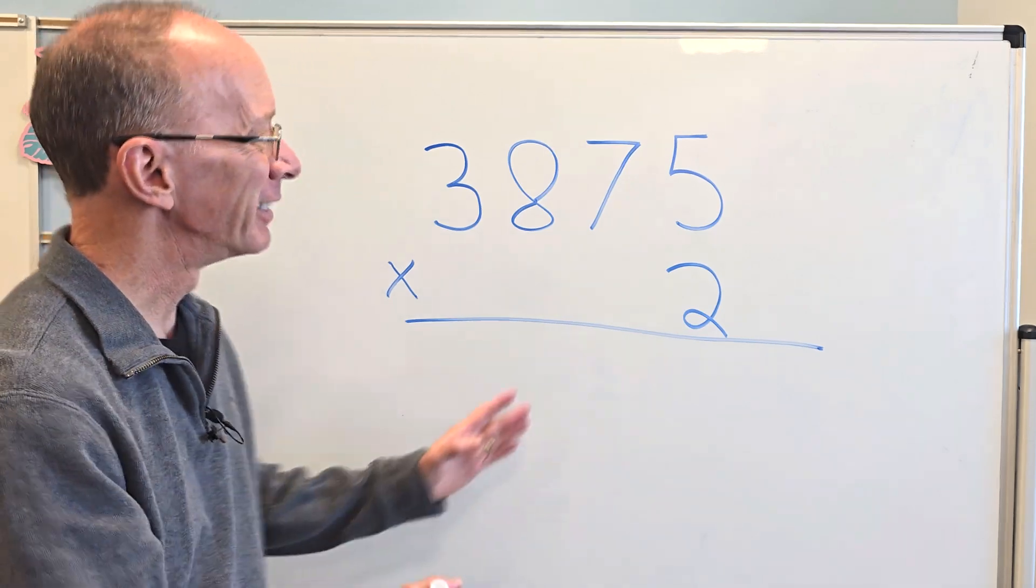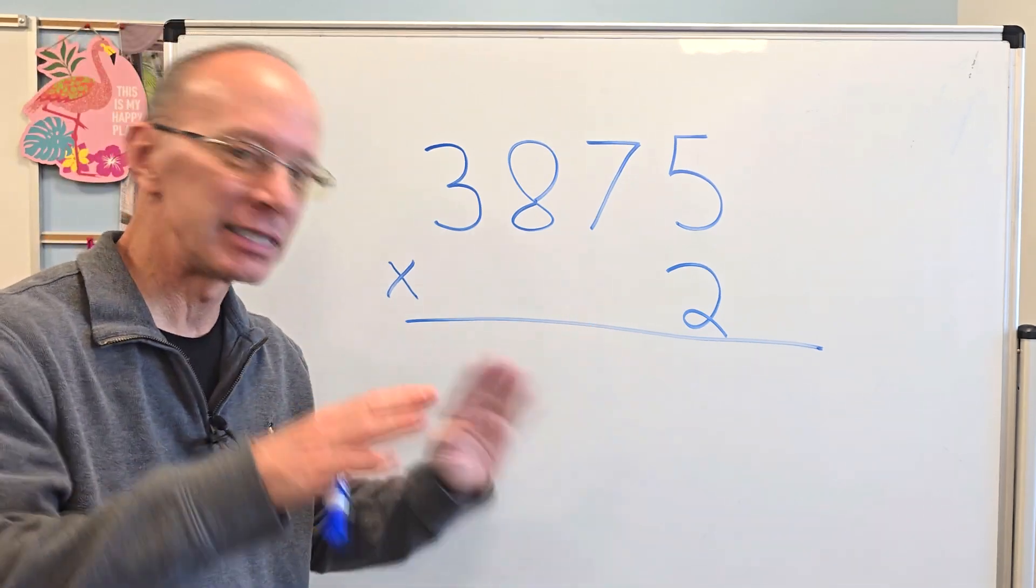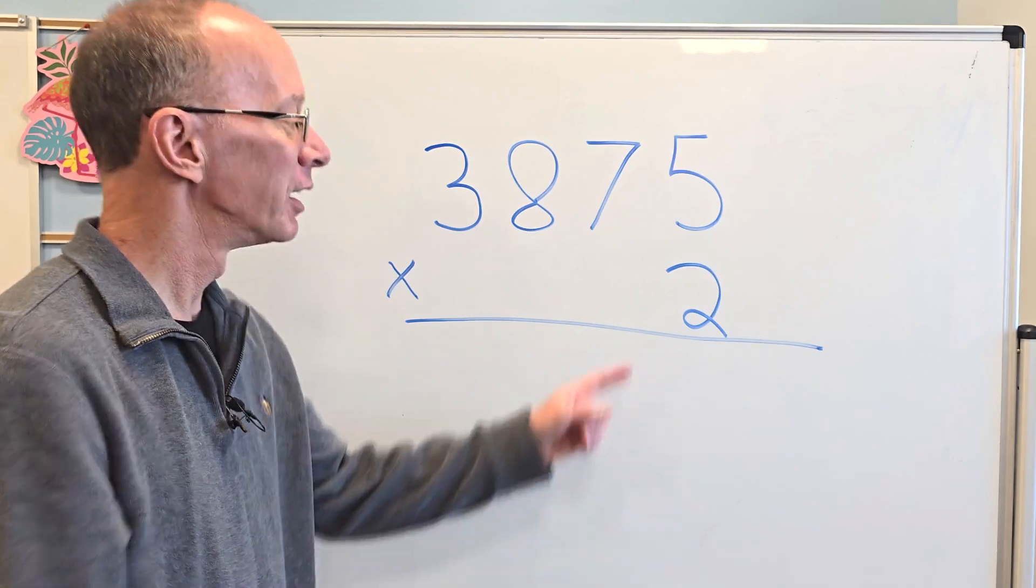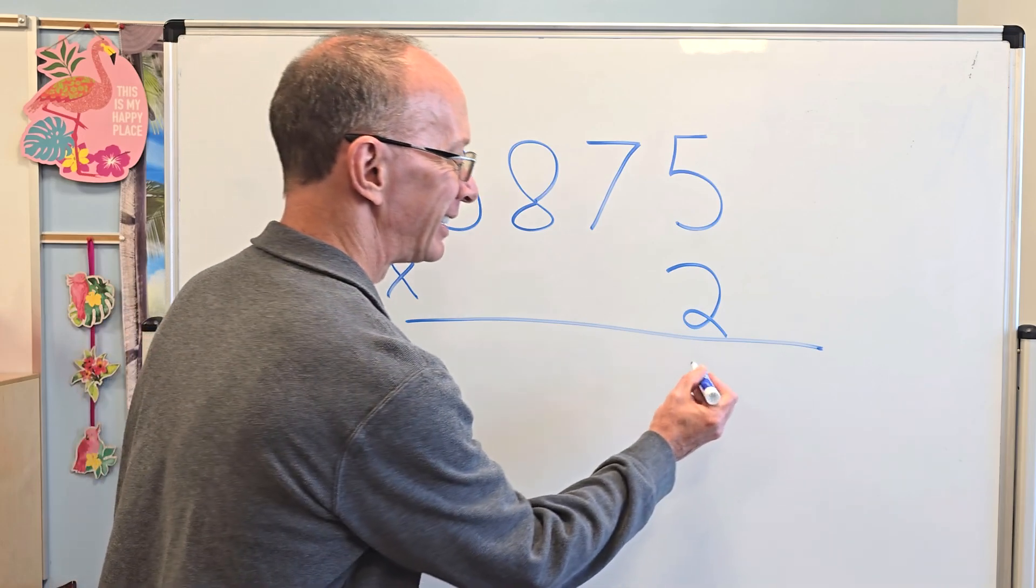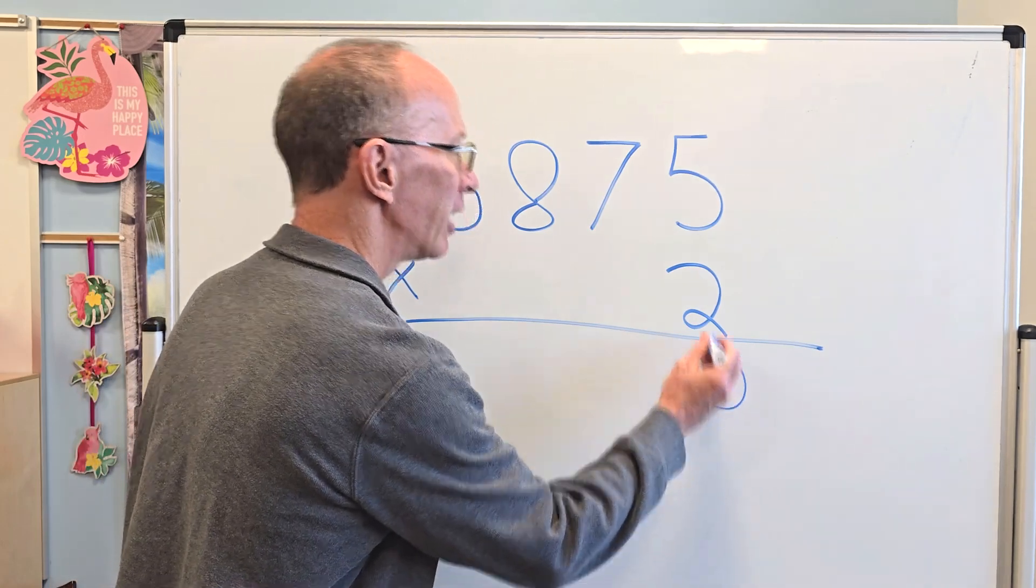All right. First of all, let's just take it step by step. Easy, cheesy, lemon squeezy. 2 times 5, what do you got? 10. So I put the zero right here. Carry the 1.